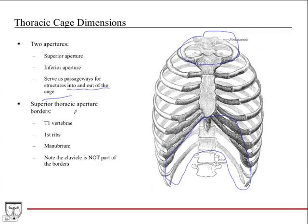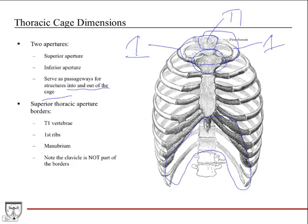The borders of the superior thoracic aperture — commonly a test question for anatomy exams — are the T1 vertebra, the first ribs on each side, and the manubrium, which is the superior part of the sternum. It's just one circle: vertebra, rib, and manubrium. One important thing to note is that the clavicle is not part of these borders — that's commonly a trick question on anatomy exams.